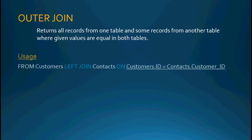So how does an outer join work? Instead of using inner join, you use the word left. So we're going from customers, we're going to left join the contacts table on those same values — customers.id must be equal to contacts.customerid. Left join is going to give us all of the records from the customers table and only some of the records from the contacts table, where customers.id is equal to customer_id from the contacts table.